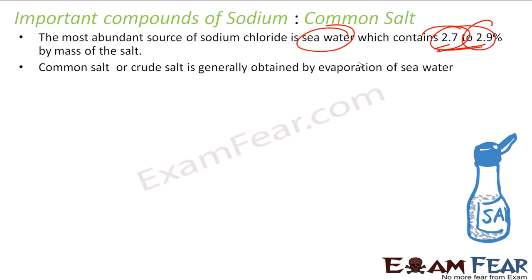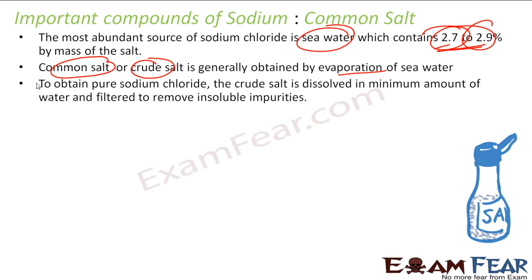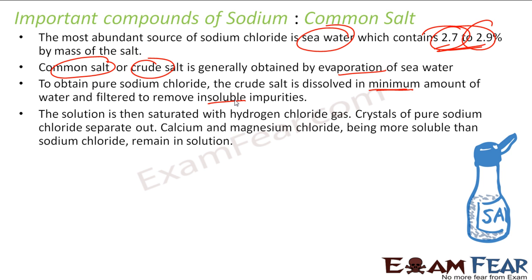But the salt obtained by evaporation of seawater is a crude salt — it has impurities. To purify it, what we do is we take this crude salt, dissolve it in a minimum amount of water, and then try to remove the impurities. We pass HCl gas, and then what happens is pure sodium chloride separates out.